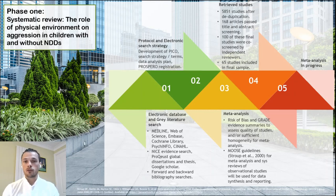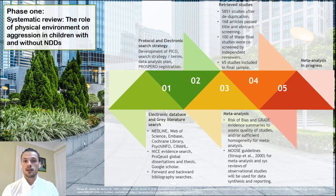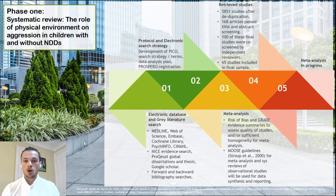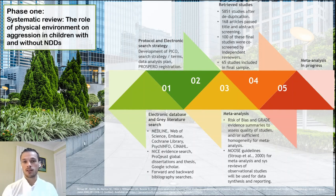We retrieved 5,851 studies after deduplication. Of these, 160 articles passed title and abstract screening, which were co-screened by colleagues in the department with an agreement of 87%. Out of 168 full-text articles, 100 were co-screened by independent reviewers with an agreement of 83%, or a Cohen's Kappa of 0.62. This resulted in 65 studies being included in the final sample. We are now examining these studies for risk of bias, GRADE evidence summaries, and testing heterogeneity between aggression outcomes to assess whether meta-analysis is possible.